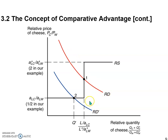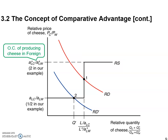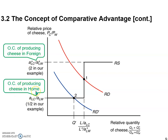Now let's look at the supply side and figure out this staircase shape — where it comes from. On the vertical axis, we have two ratios: A star LC over A star LW, and A LC over A LW. If you recall, we already derived these two. This one is the opportunity cost of producing cheese in foreign, and this one is the opportunity cost of producing cheese in home. These are the two specific levels of relative price where RS is flat, with flat segments.